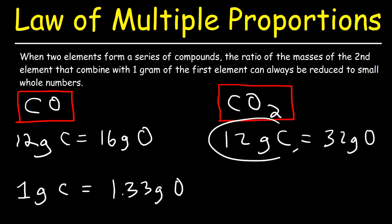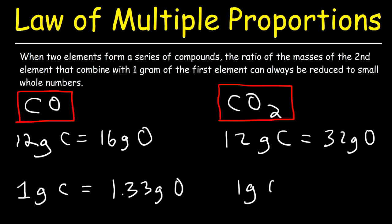Now let's divide this by 12, and let's divide 32 by 12. 32 divided by 12 is 2.67. So now let's focus on the statement: the ratio of the masses of the second element.